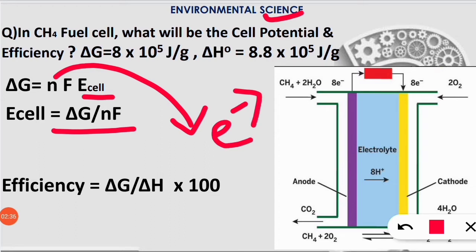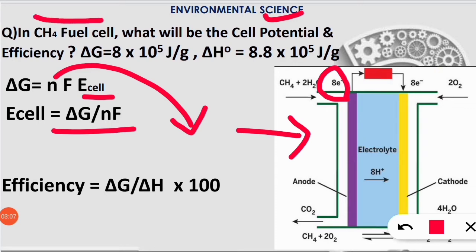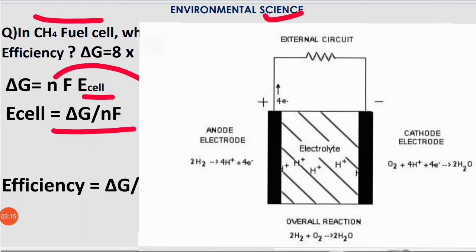If you know the reaction, you can determine n. In a methane fuel cell as shown in this diagram, the number of electrons transferred is 8. Similarly, if the question asked about a hydrogen fuel cell, you would consider n as 4, because in hydrogen fuel cells four electrons are transferred. You have to remember these two things.